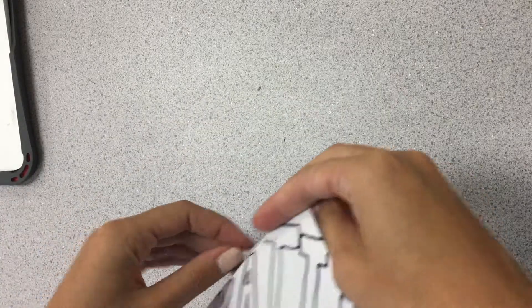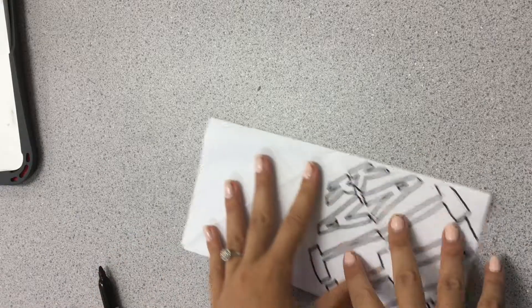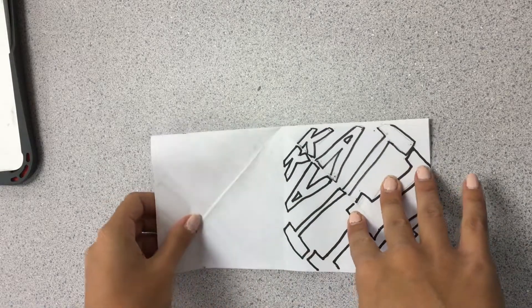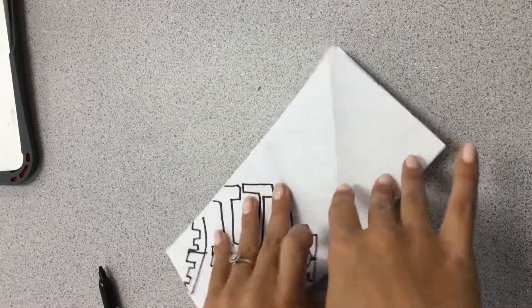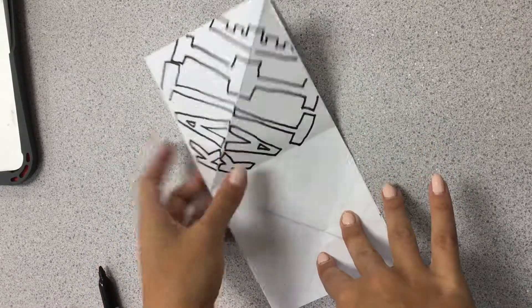I'm going to do the same thing. I'm going to fold it in half again. Wait, sorry, I'm going to fold it in half like a square. And now it's time to trace these two sides and these two sides.